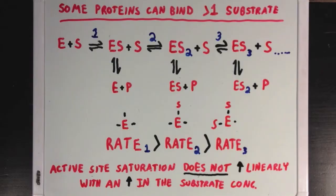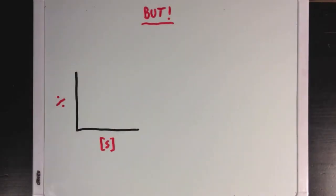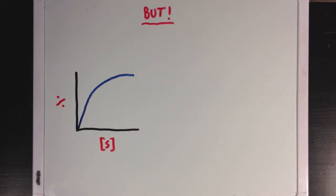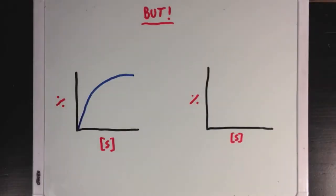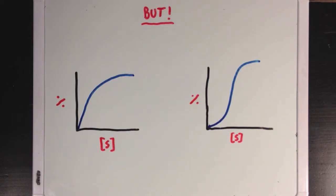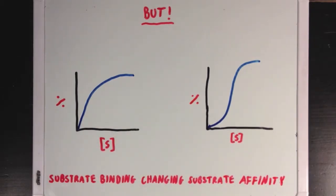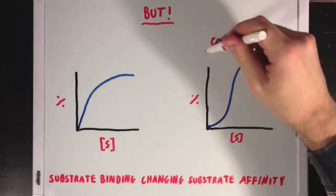Let's look at it graphically, but we're also going to show an exception to this rule. In this first graph, I've plotted substrate concentration against the percent saturation of the enzyme, and as you can see, the curve levels off as substrate binding sites become occupied — it becomes difficult to bind more substrate molecules as you have more substrate molecules bound. Next, I'm going to draw a different curve that you might also see in some enzymes, where substrate binding happens more quickly as binding sites become occupied. Substrate binding changes substrate affinity, and we call this cooperativity.